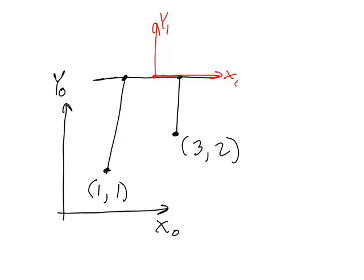The other two design variables that I have to specify are the locations where these joints are attached to the platform. I'm going to suppose that this joint is attached to the platform in frame one at position x1 equals 0.5 and y1 equals 0. Similarly, I'm going to assume that this other point is at negative 0.5, 0.